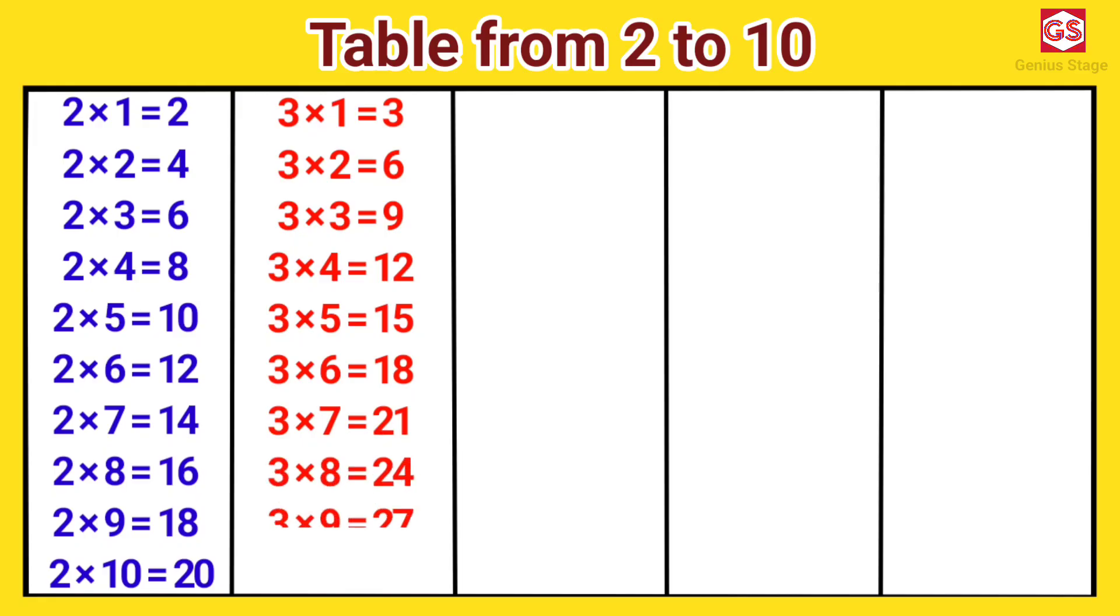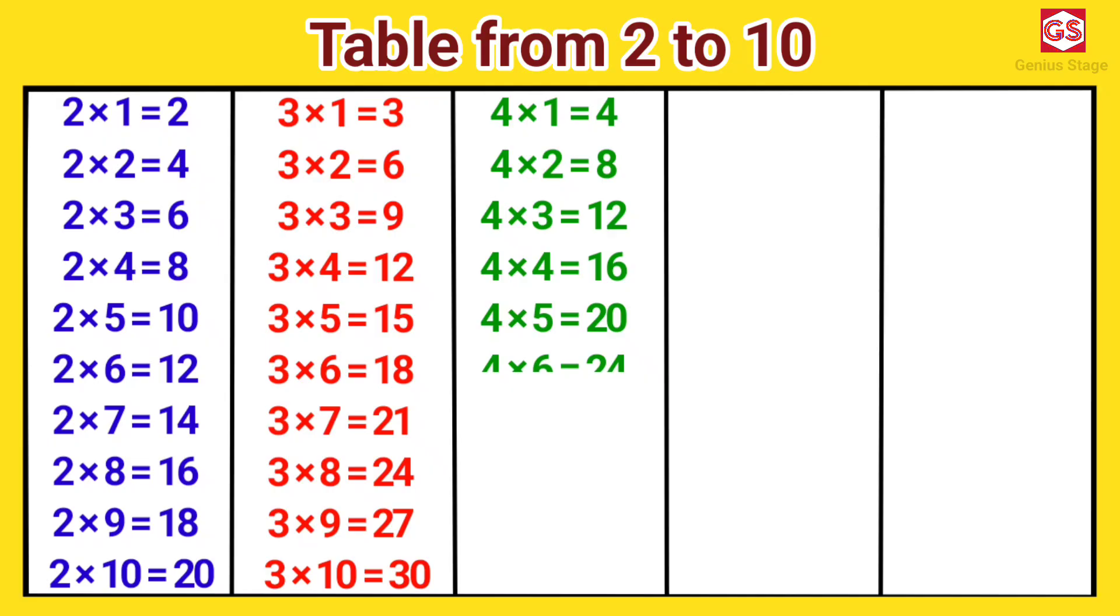24. 3 nines are 27. 3 tens are 30. 4 ones are 4. 4 twos are 8. 4 threes are 12. 4 fours are 16. 4 fives are 20. 4 sixes are 24. 4 sevens are 28. 4 eights are